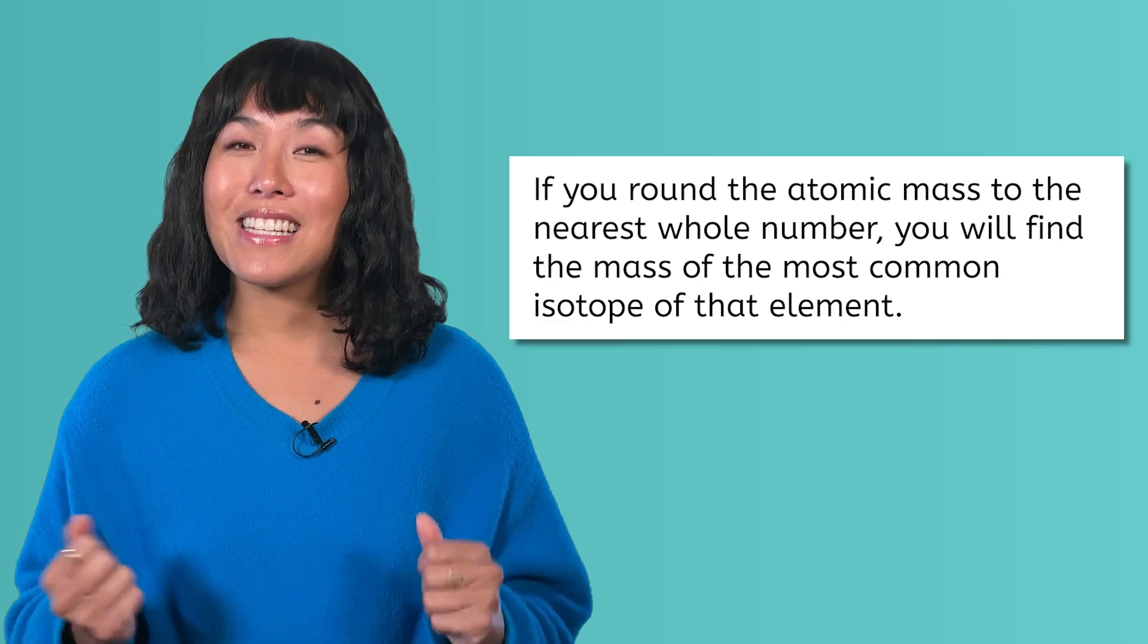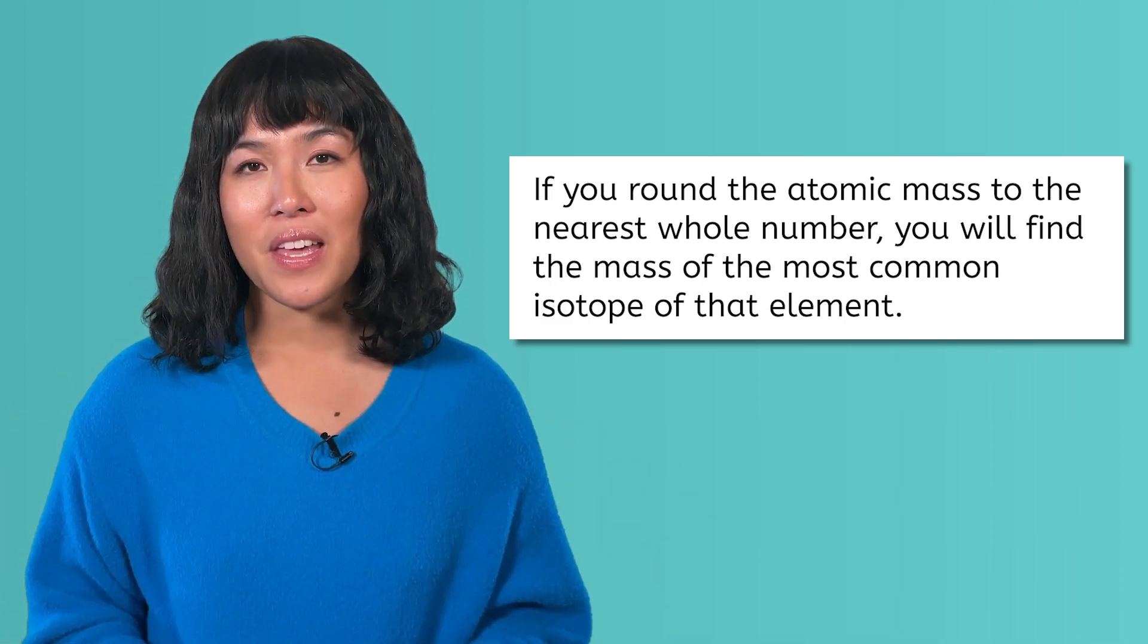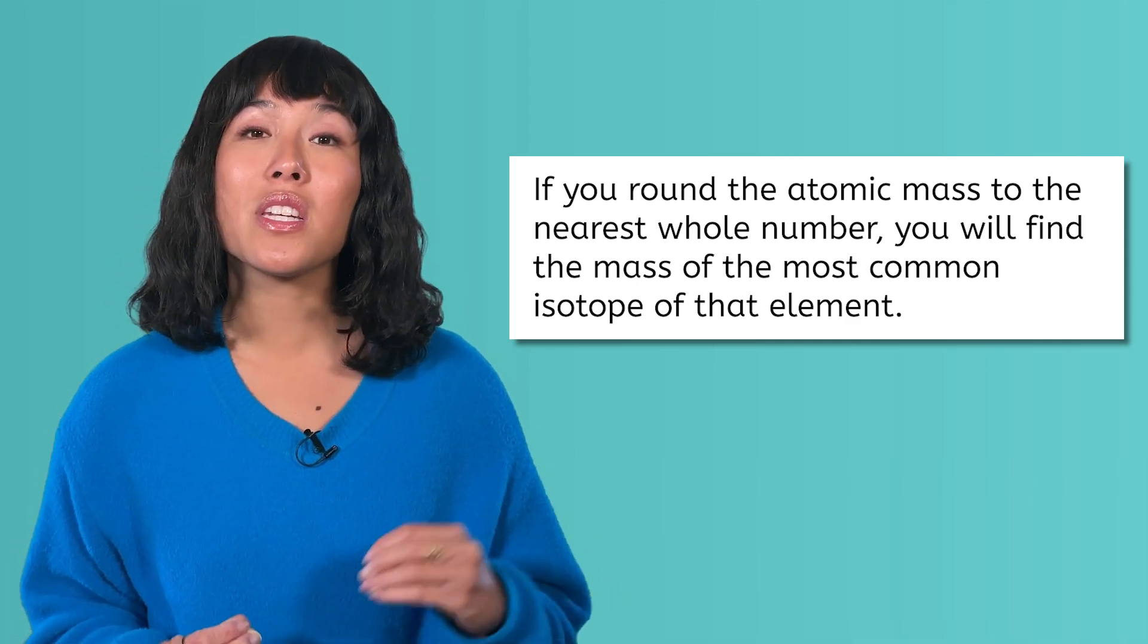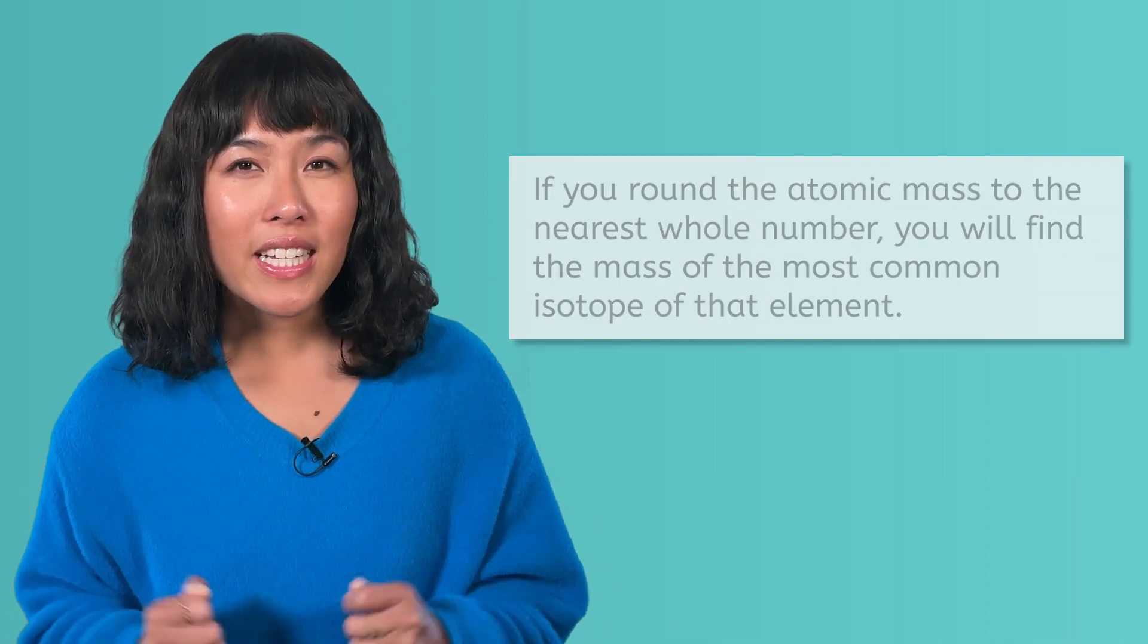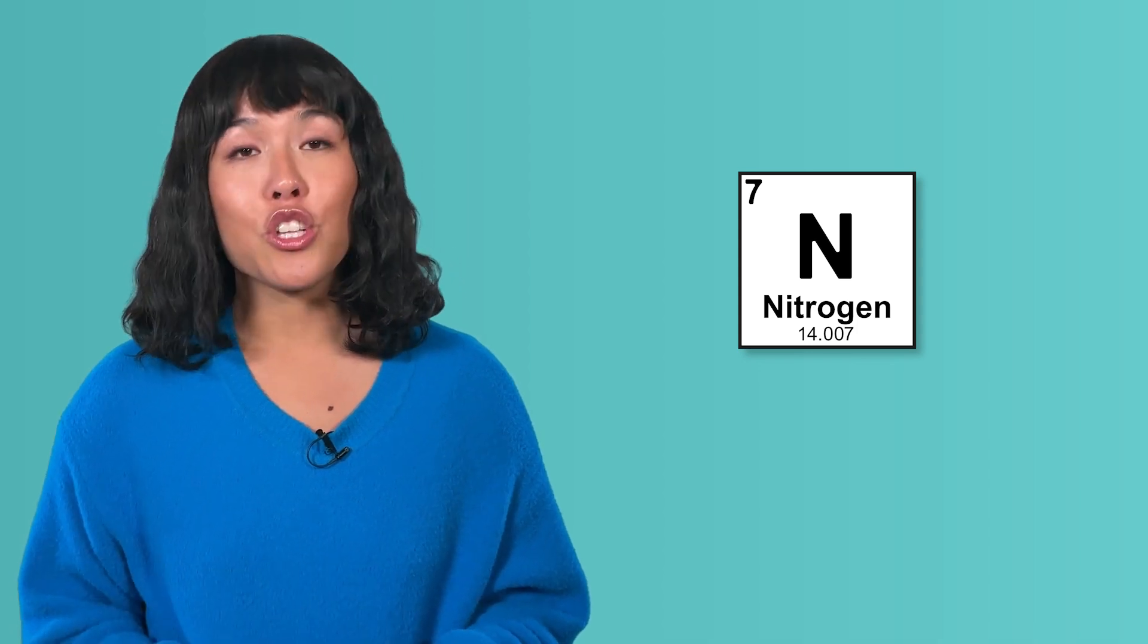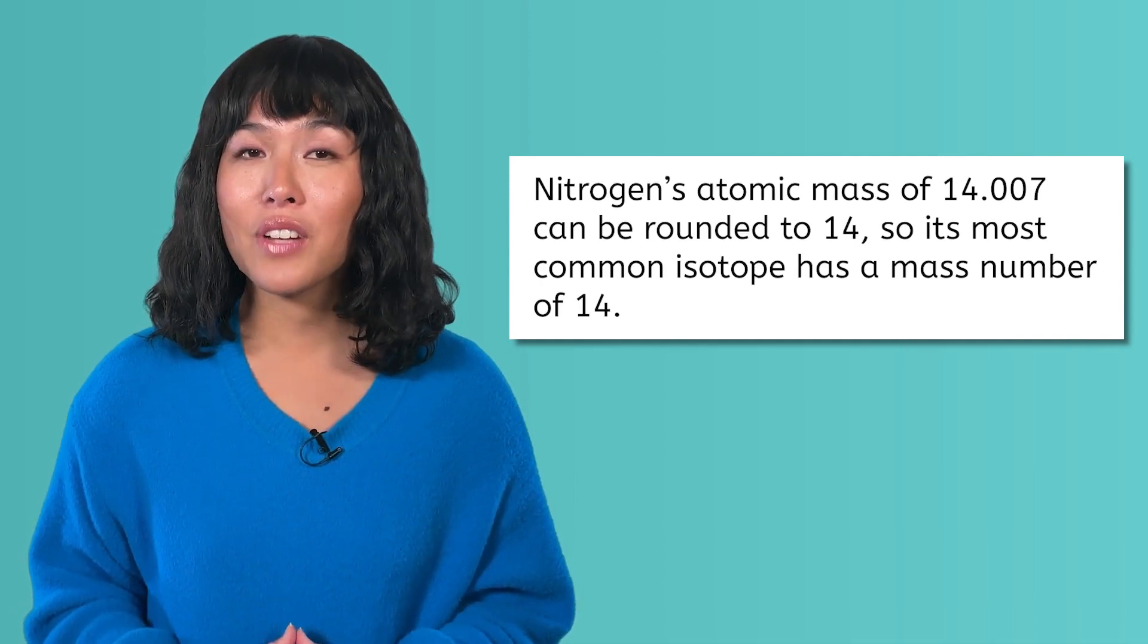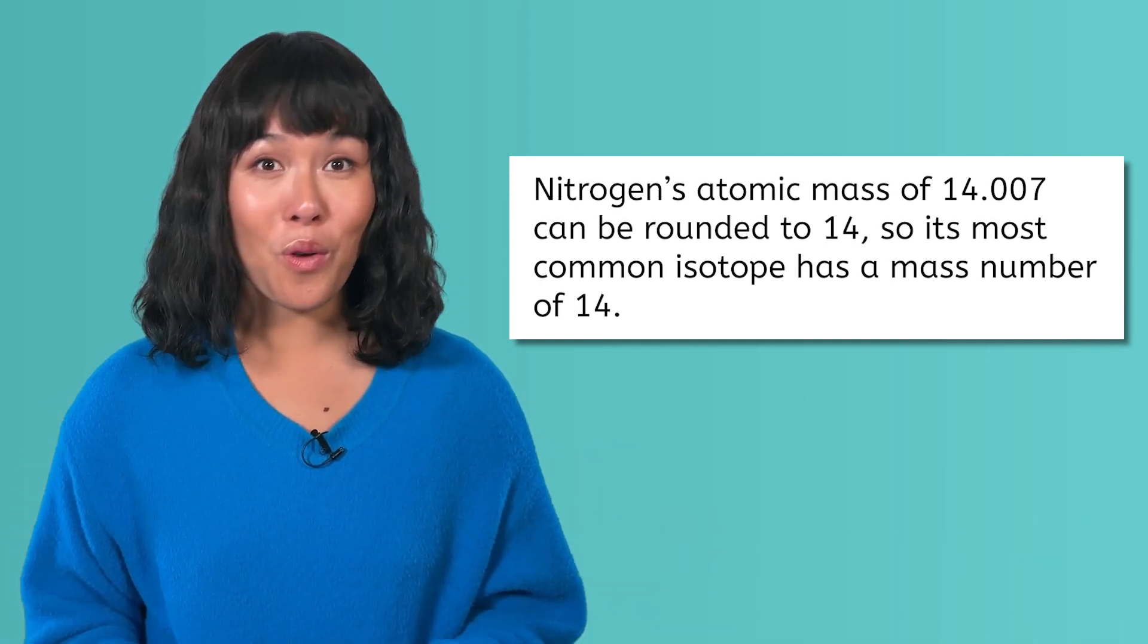Another way that weighted atomic masses can come in handy is when trying to determine the number of neutrons in an element. If you do not have a mass number for an atom, you can use the atomic mass to determine the mass of the most common isotope of an element by rounding the atomic mass to the nearest whole number. Looking at nitrogen again, if we round the atomic mass 14.007 to the nearest whole number 14, we can assume that the most common isotope of nitrogen is nitrogen 14, which is true.